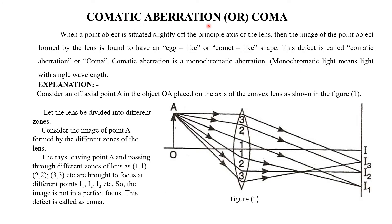Now coming to chromatic aberration. When a point object is situated slightly off the principal axis of the lens — that is, not on the axis of the lens — then the image of the point object formed by the lens is not like a point; it is like an egg or comet-like shape. This defect is called chromatic aberration or coma. This is a monochromatic aberration, which means when light of a single wavelength is allowed to pass through the lens, you will get this type of defect.